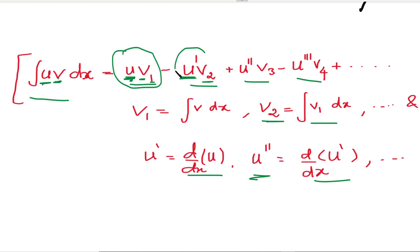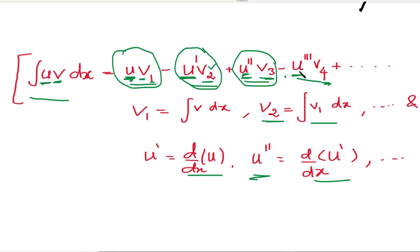Continue the terms with alternating plus and minus signs. We stop when the differential value of u becomes 0. When using Bernoulli's formula, the polynomial function is taken as u, and the exponential, sine, or cosine function is taken as v. This is because u needs to be differentiated repeatedly until it becomes 0.